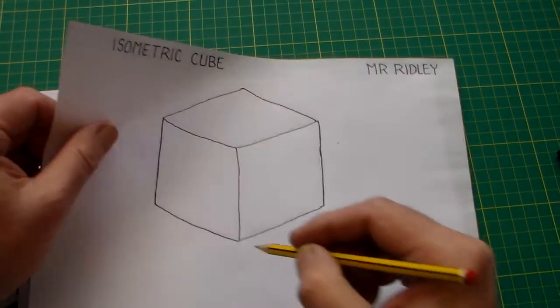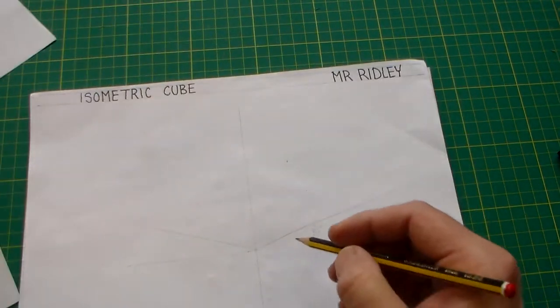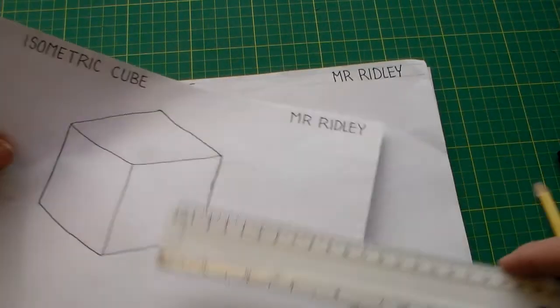If we draw another line at 30 degrees there, you can see that we now have the corner of our cube.